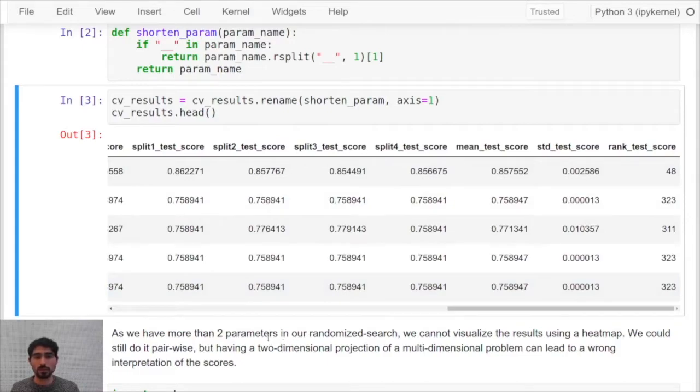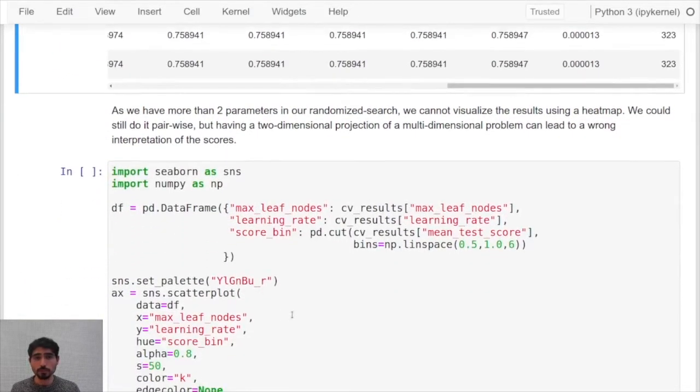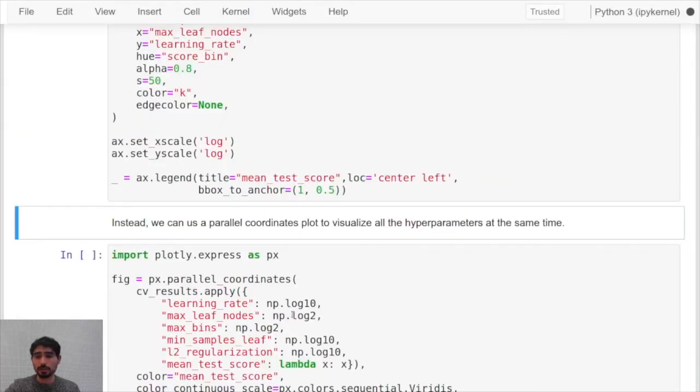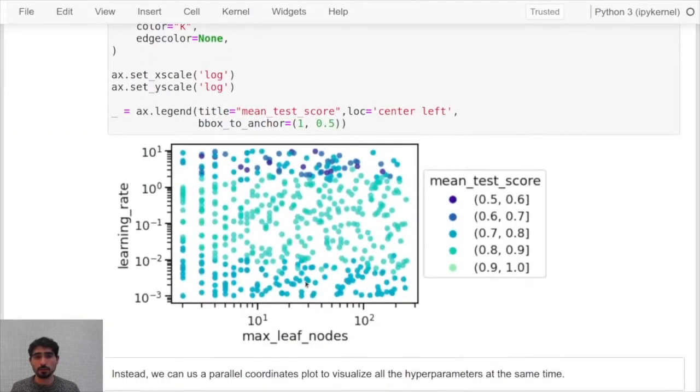We can think of possible ways to visualize these scores and one of the possibilities is having this kind of scatterplot heatmap that will encode the mean test score in colors for each combination of learning rate and maximal number of leaves. Here we can notice that there is a band between 10 to the minus 2 and 10 to the zero in learning rate that will lead us to the best possible scores.